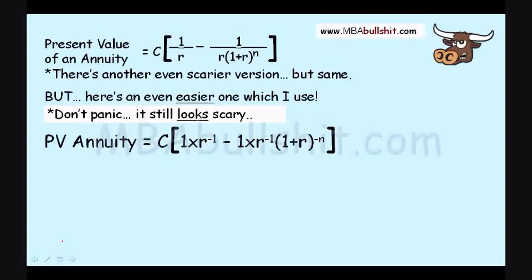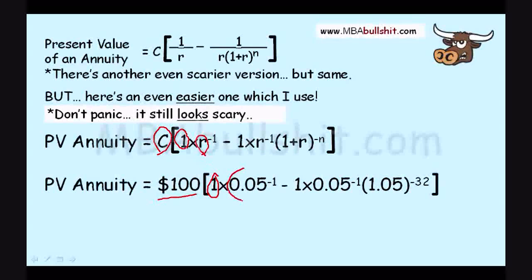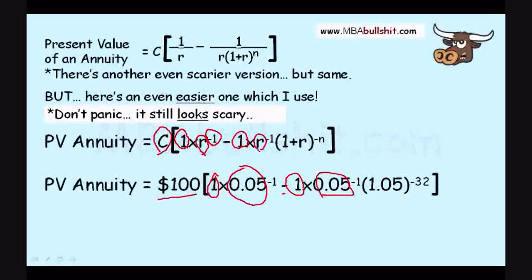So, based on the earlier example, the present value of our annuity is $100, which is the cash payment or cash flow over here, multiplied by 1 which is given in the formula. Multiplied by the rate of the bank or the discount rate which is 5% or 0.05 raised to the negative 1 which is given. Again, 1 which is given multiplied by 0.05 which is the rate over here. Raised to the negative 1 which is also given.